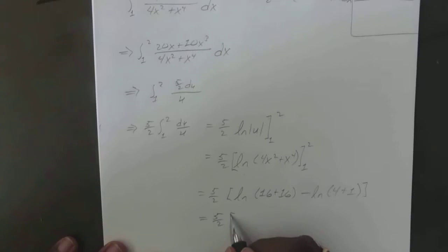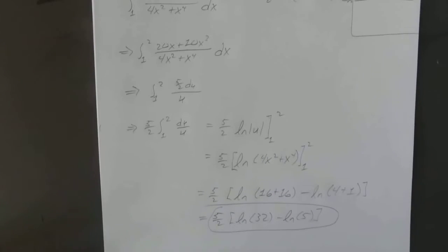So you end up with 5 over 2 times the natural log of 32 minus the natural log of 5. And we'll leave that as an exact answer.